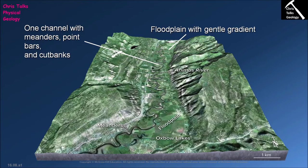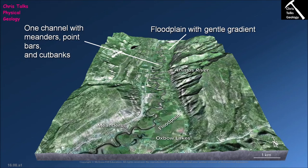Either side of our meandering river channel we're going to have a floodplain with quite a gentle gradient, reflecting the low-gradient environment in which the river is located. Any topographic depressions on the floodplain will naturally be filled in over time with sediment deposited when the river floods. This produces a floodplain that is not only gently sloping but also surprisingly flat, because depressions get smoothed out by repeated flood deposits.